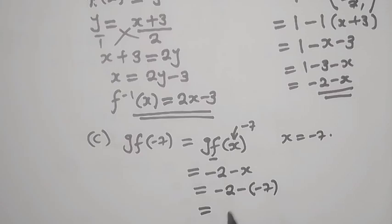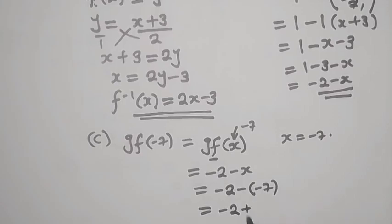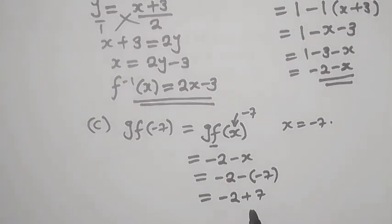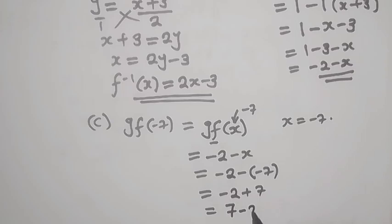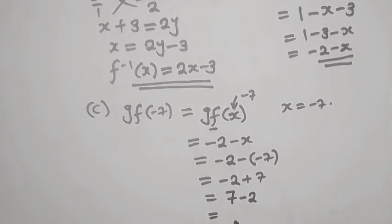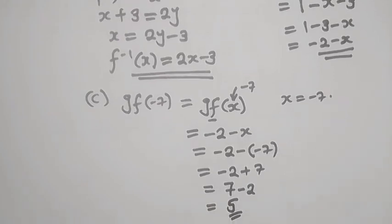Then from there now, we can say negative 2, negative times negative is going to be plus 7. So from there now, we can just flip this one, start with a positive number, 7 minus 2. And then from there now, 7 minus 2, we are going to get 5. So that is our answer.